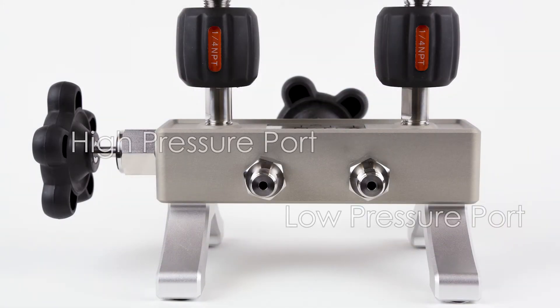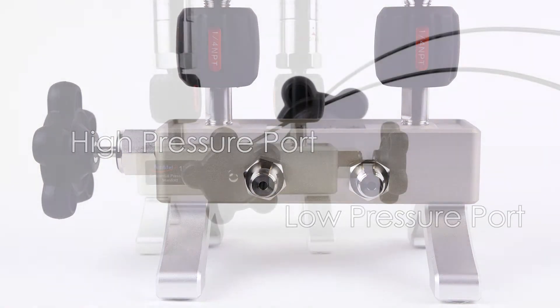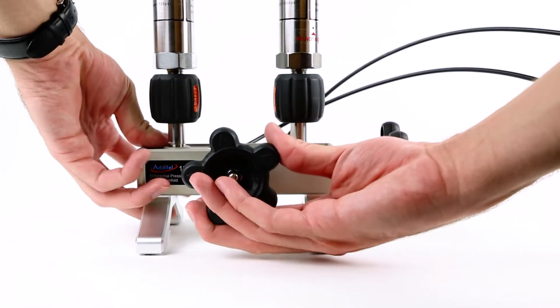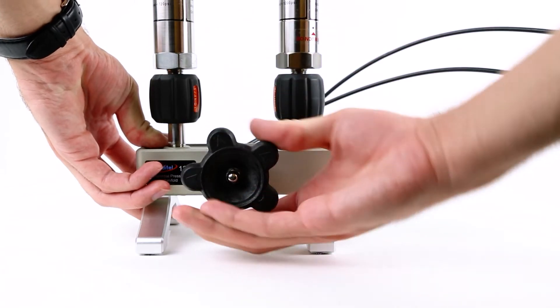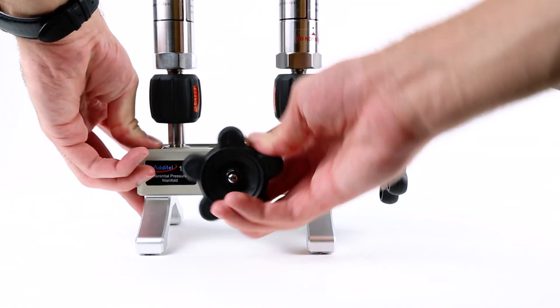On the back of the manifold are the pressure lines for the low and high ports. The valve on the front of the manifold when open allows for both the low and high pressure ports to be open to the line pressure.